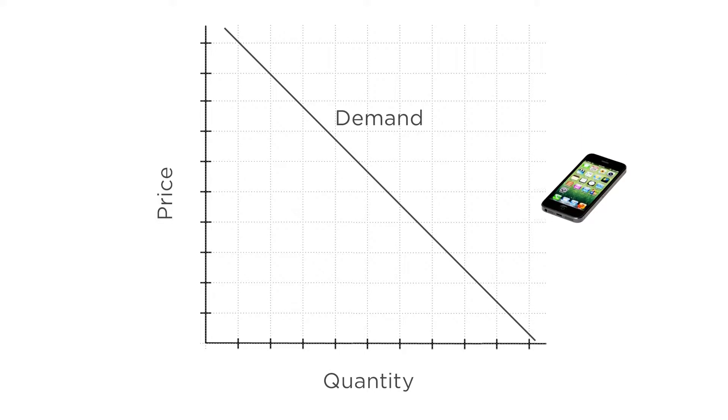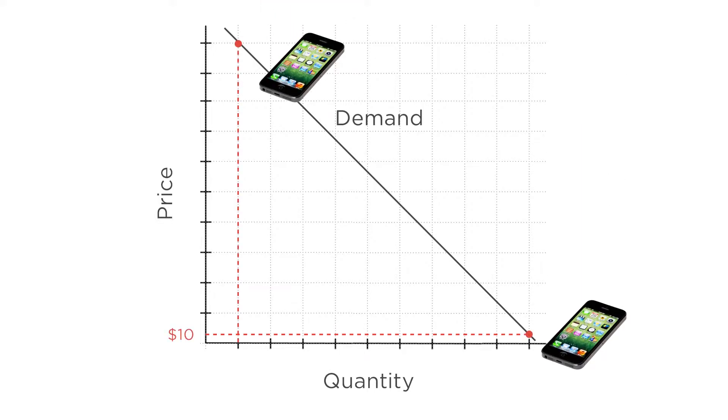For example, Apple will sell a lot more iPhones if each iPhone costs $10 than it will if the phone costs $1,000. And now we also know the important technical reasons behind the downward sloping demand curve. Individuals maximize their utility subject to their budget constraint. As the price of a good rises, consumers buy less of the good for two reasons.